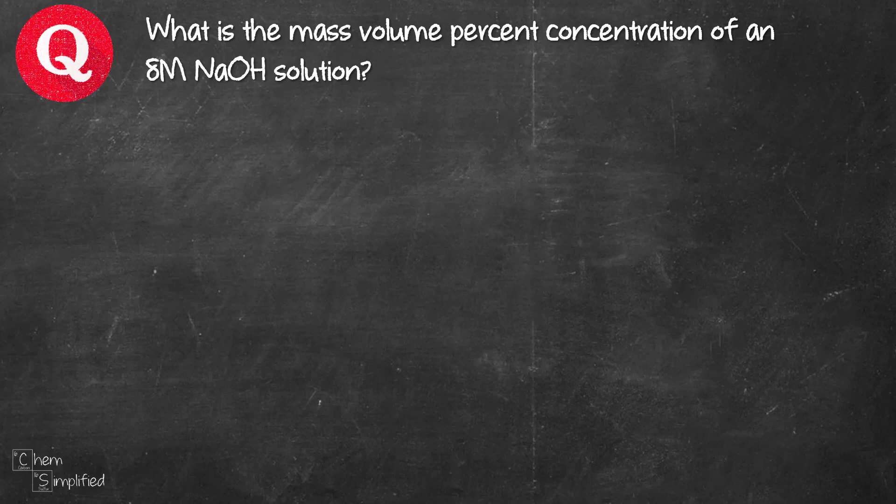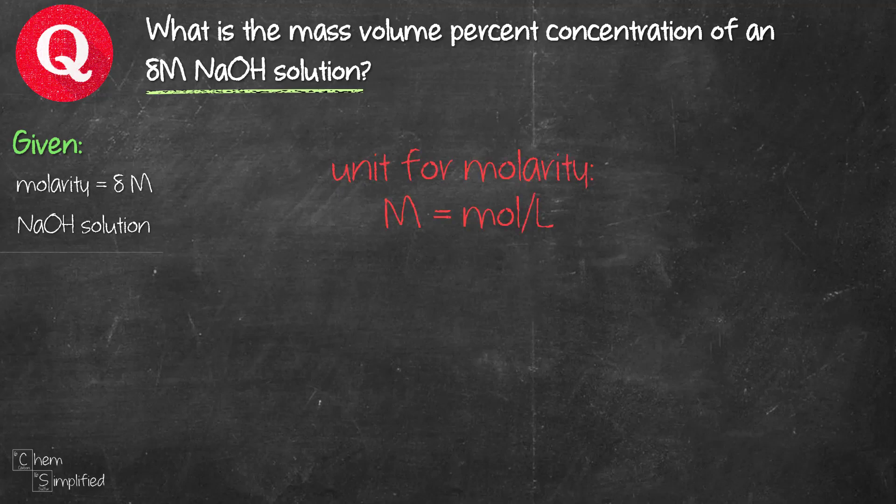So before we start anything, let's just figure out what's given. The information that we have is 8 molar NaOH solution. 8 molar is a molarity. M is molar, that's mole per liter. NaOH solution, that's another piece of information that we have. So now that we have those two, let's figure out what we need to find.